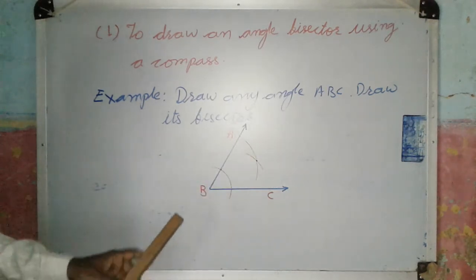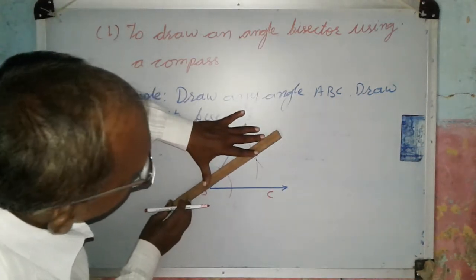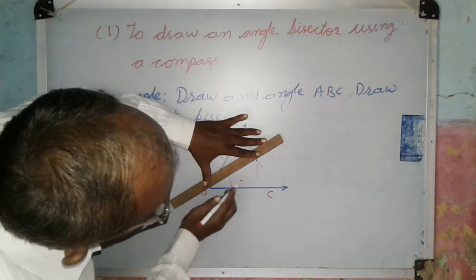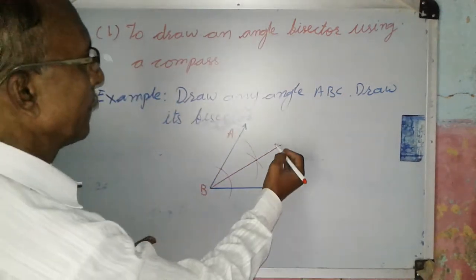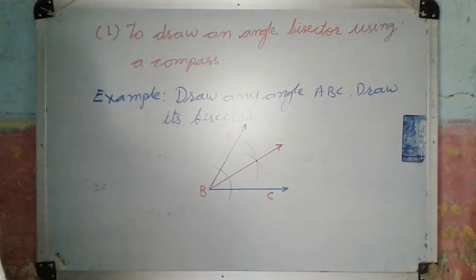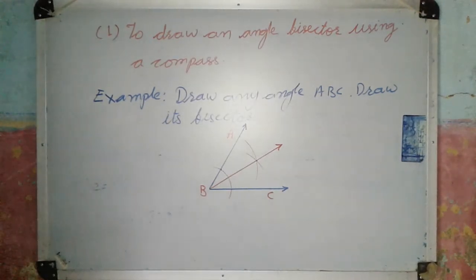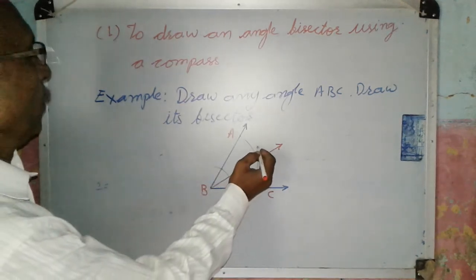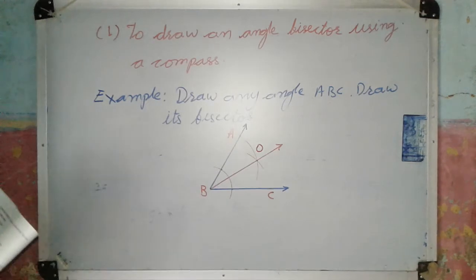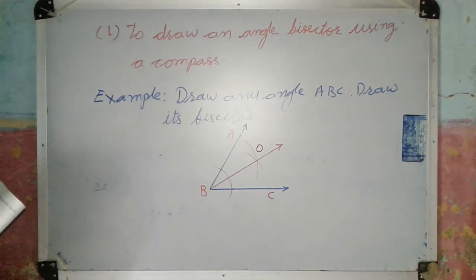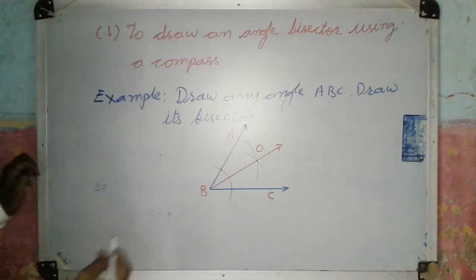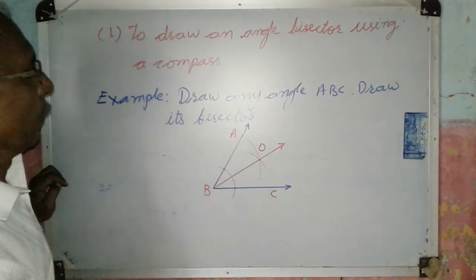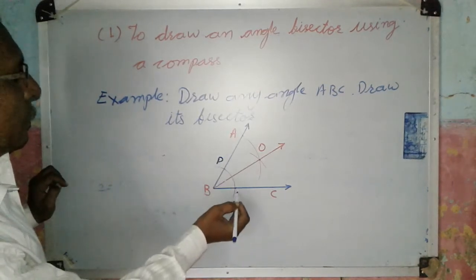Draw a ray from B passing through this point — this is the angle bisector. In this way, you can draw the angle bisector of any angle. You can also give names to the points, for example, calling the intersection point P or Q.